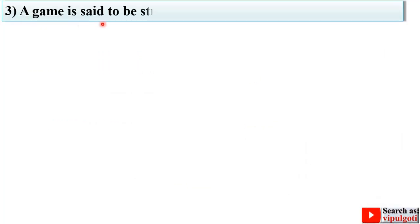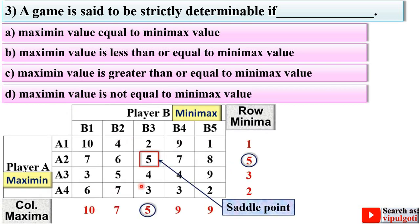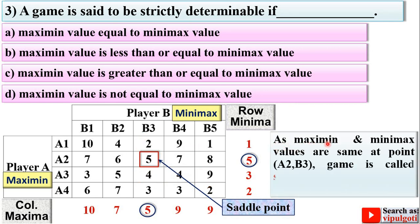Next question: a game is said to be strictly determinable if — options are as follows. Looking at this image showing the solution of a game problem, the maximin value and minimax value are the same at this point, so this is a saddle point and the value of the game is 5. This game is known as strictly determinable. Maximin and minimax values are the same at point A2 to B3, so the game is called stable and strictly determinable. Therefore, A is the right answer.